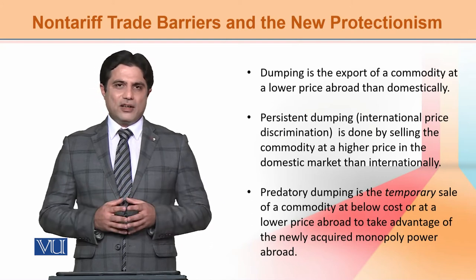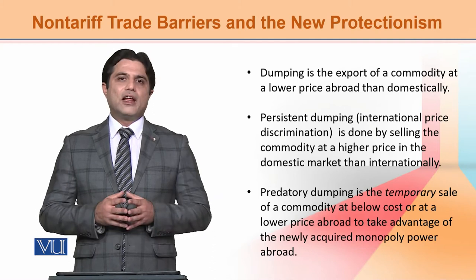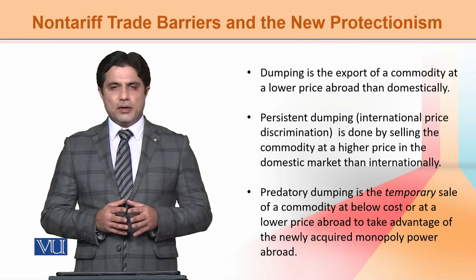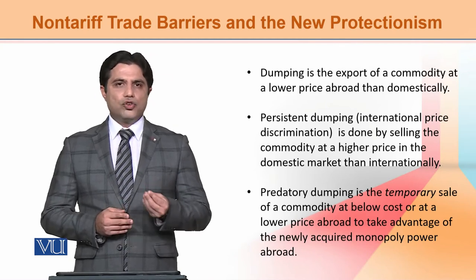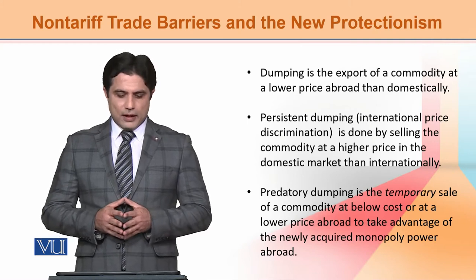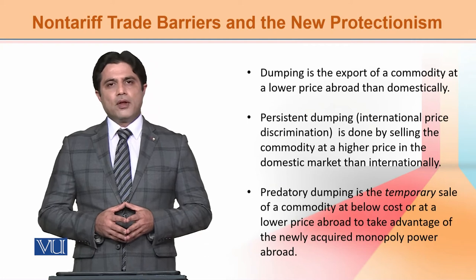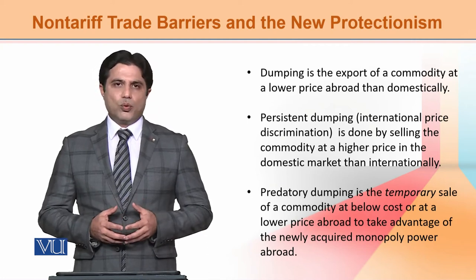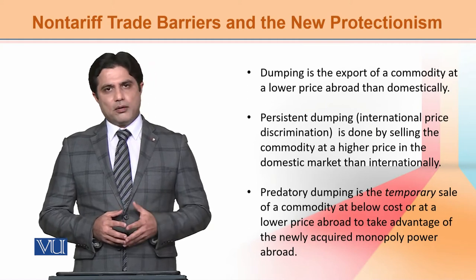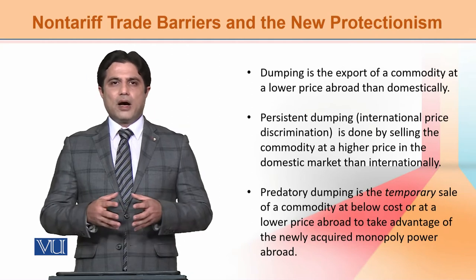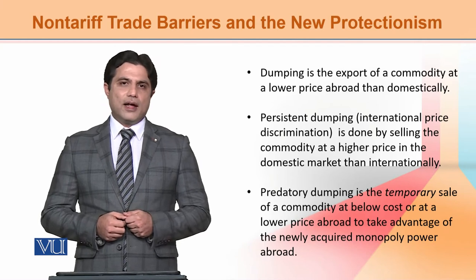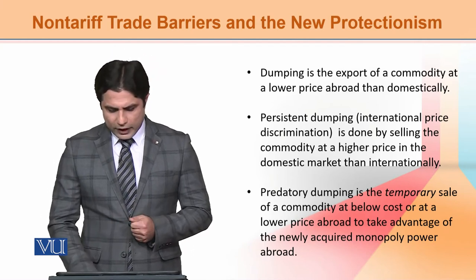In persistent dumping, there are more sellers in the international market so the producer faces competition and must keep prices competitive to capture some market share — there is no major issue with this type. But in predatory dumping, the objective is altogether different: the producer wants to capture the foreign market and take all consumer surplus.